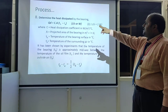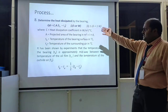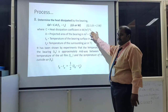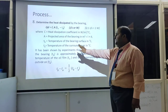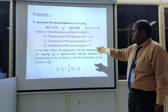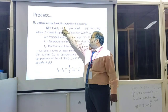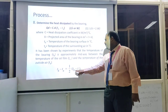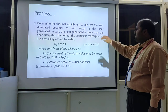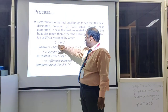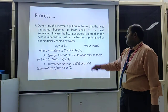Step 8 — determine the heat dissipated using: QD = C × A × (TB − TA) watts, where C is the heat dissipation coefficient in W/m²/°C, A is the projected area of the bearing in m² (= L × D), TB is the temperature of the bearing surface in °C, and TA is the temperature of surroundings in °C. The term (TB − TA) is approximately equal to ½(T₀ − TA). The heat carried away by oil is QT = m × S × T, where m is mass of oil in kg, S is specific heat of oil (1840 J/kg°C), and T is the difference between outlet and inlet oil temperature in °C.